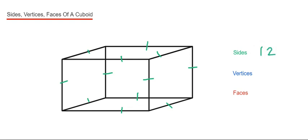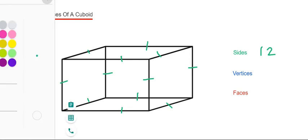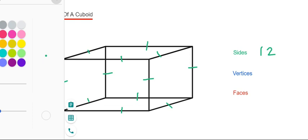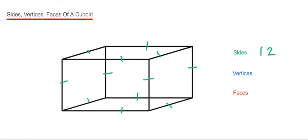The vertices are the corners of the shape. This is where the sides meet. So let's count these. We've got 1, 2, 3, 4, 5, 6, 7, 8. So we've got 8 vertices.